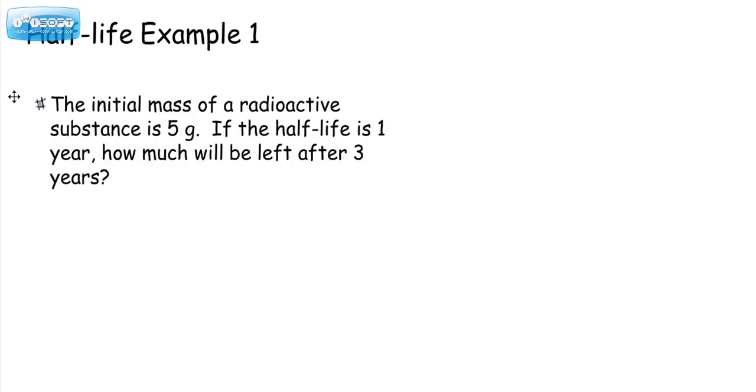So the first example is that we have an initial mass of 5 grams. If the half-life is 1 year, how much will be left after 3 years? So if our half-life is 1 year, and we have 3 years, then that means we have 3 half-lives.